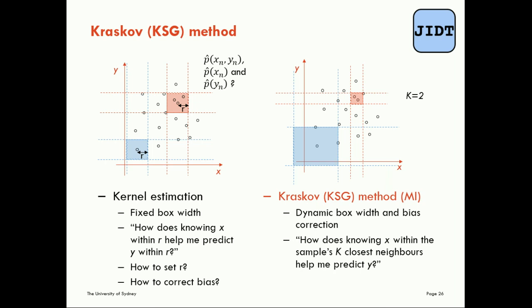In addition to this, the KSG estimator implements bias correction. It does that by using an underlying Kozachenko-Leonenko estimator for the entropies and then using the same radii in the full joint and marginal spaces to maximally cancel out the bias. I'll talk more about that in the next slide.